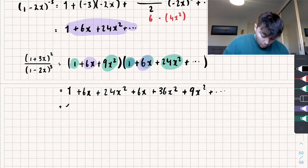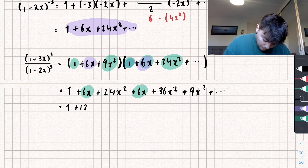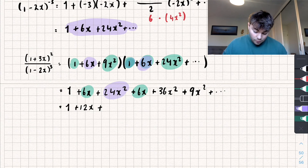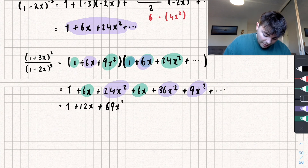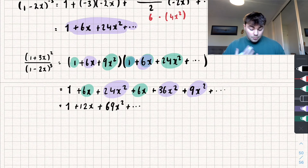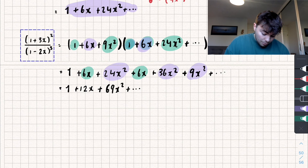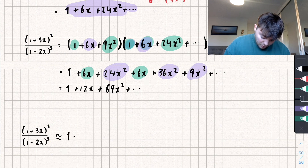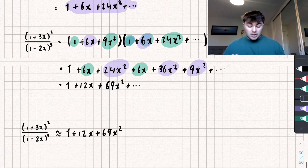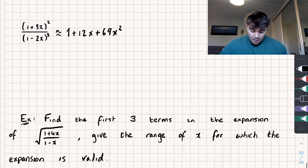Collecting like terms: the x terms give 6x + 6x = 12x. The x² terms: 24 + 36 + 9 = 69x². So the first three terms are approximately equal to 1 + 12x + 69x².